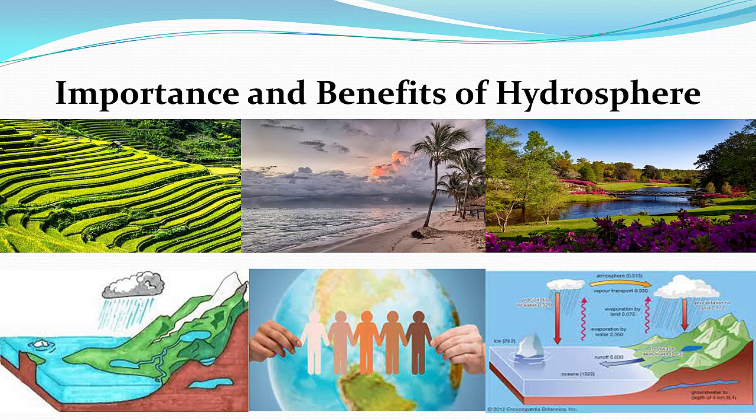It is from hydrosphere that water vapors enter the atmosphere by the process of evaporation. These water vapors turn into clouds by the process of condensation and produce rain, which is beneficial for all forms of life on the Earth.